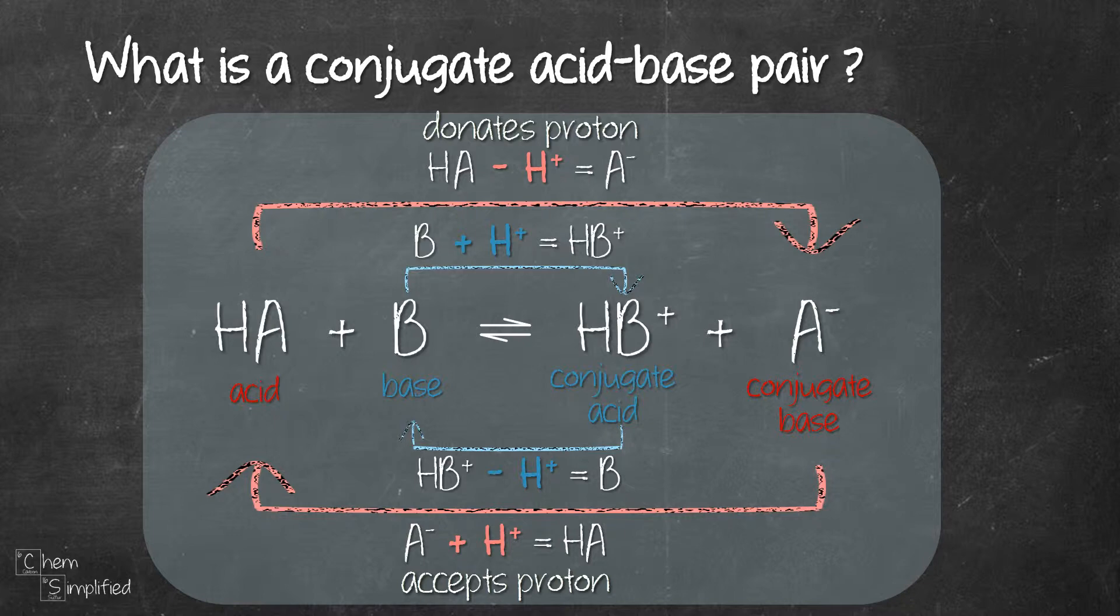Donating proton is a behavior of an acid and since HB+ is a product formed from B, HB+ is called the conjugate acid of B.